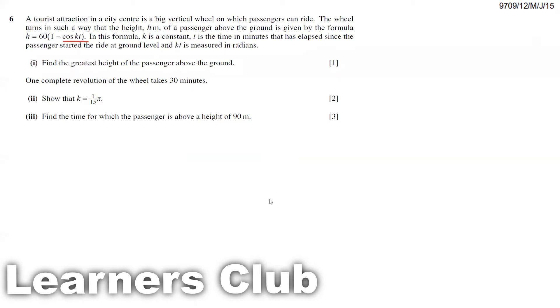As you can see I've done the working. The value of h will be maximum when cos kt is considered as minus one. When you substitute minus one, one minus of minus one becomes two. Two into sixty, we get 120 meters. So that's the maximum value h can reach.